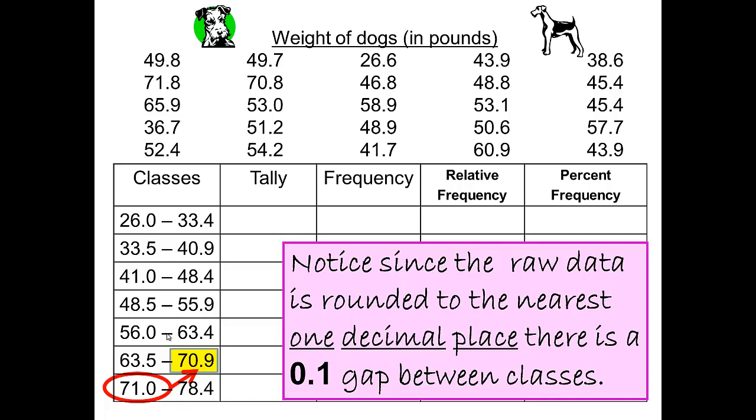Since the raw data is rounded to the nearest one decimal place, there is a 0.1 gap between the classes. That way, none of the data can fall in between two classes.